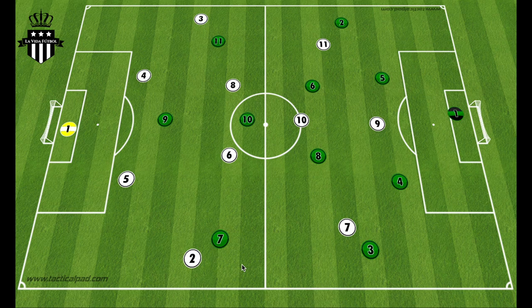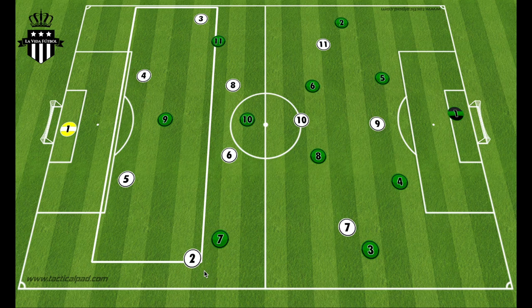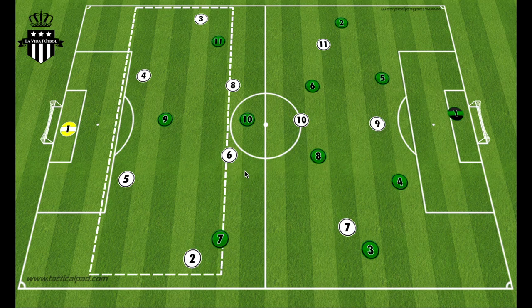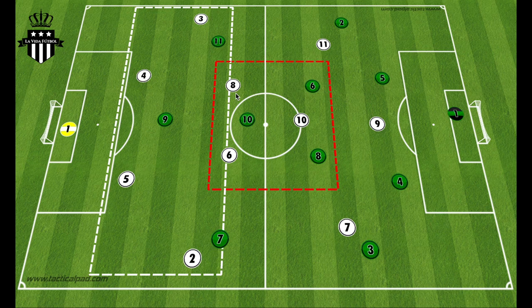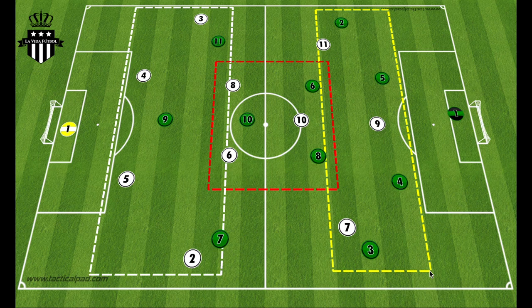Now let's take a look at how the 4-2-3-1 matches up against a 4-2-3-1. In the back, we have a 4 versus 3, or if one or both center defensive midfielders drop back, it could be a 5 or even 6 versus 3. In the center of the pitch, like in the 4-3-3 versus the 4-2-3-1 matchup, it's a 3 versus 3. The difference is you have two center defensive midfielders versus one, and one center attacking midfielder versus the two center defensive midfielders. It's still a 3 versus 3 numerically, and the same numerical disadvantage of 3 versus 4, or up to 6 versus 3, on the other end.